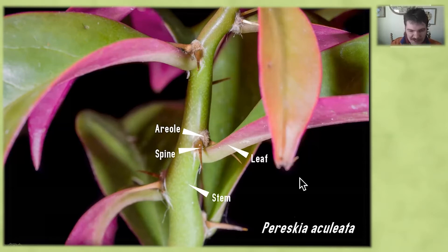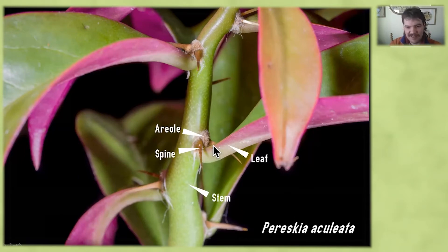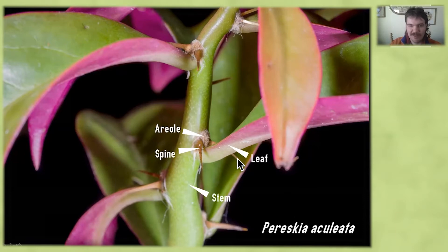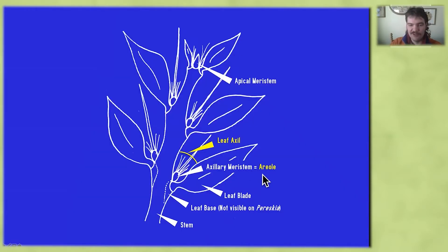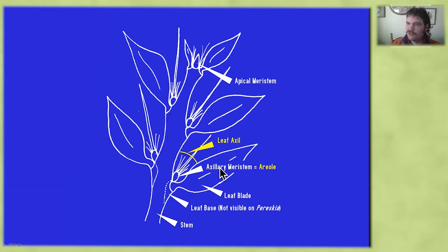We're going to look at a little bit of the morphology of the stem first so we can better interpret some of the anatomical features. So first, obviously, we have the stem. And then coming out of that stem, we have a leaf. And then between the leaf and the stem, we have what's called an areole, and coming from that areole we have two spines. In order to understand what's going on here, we will turn to this drawing. Once again we have our stem, we have our leaf, but we're going to split the leaf into two different parts.